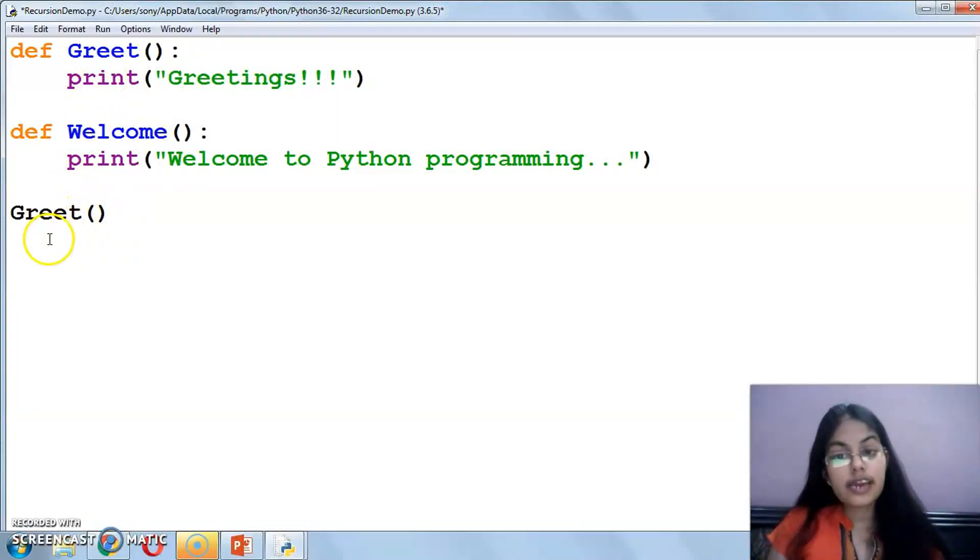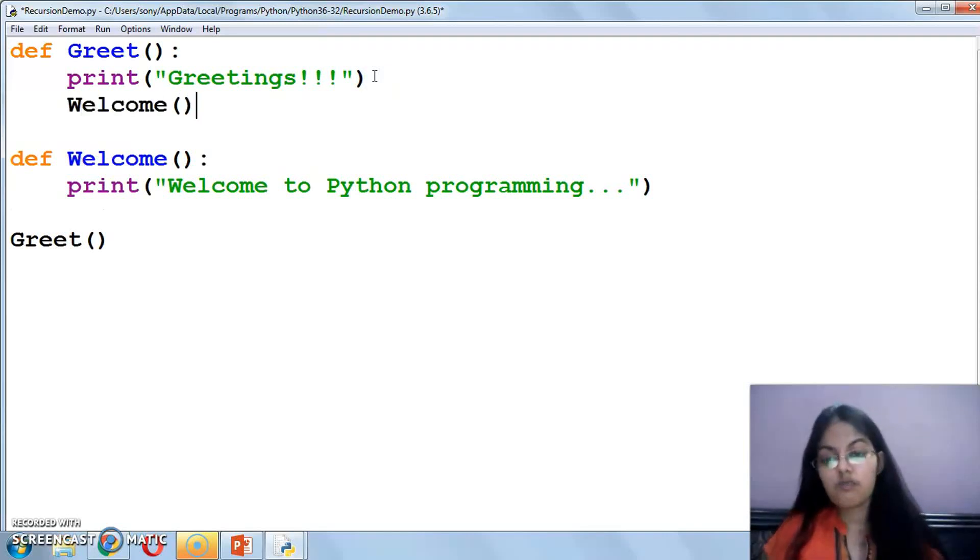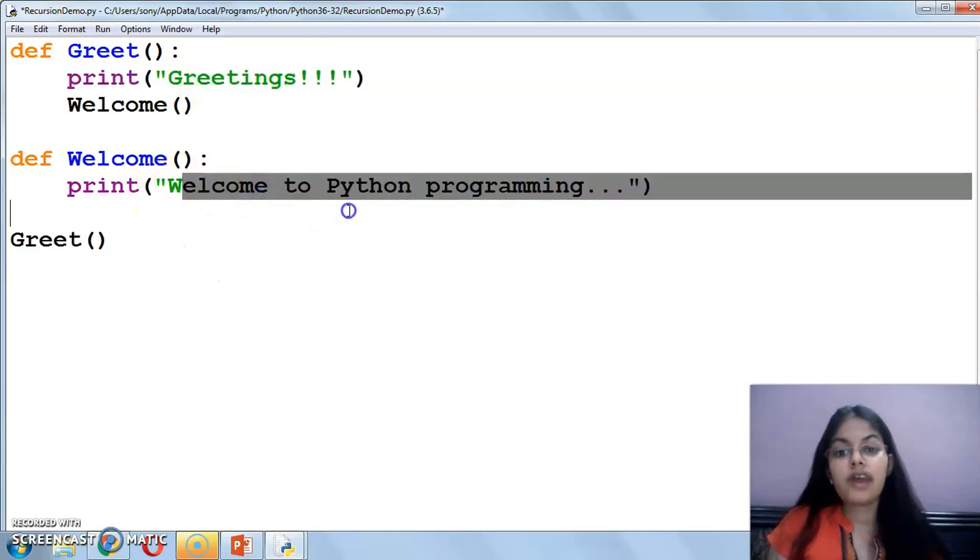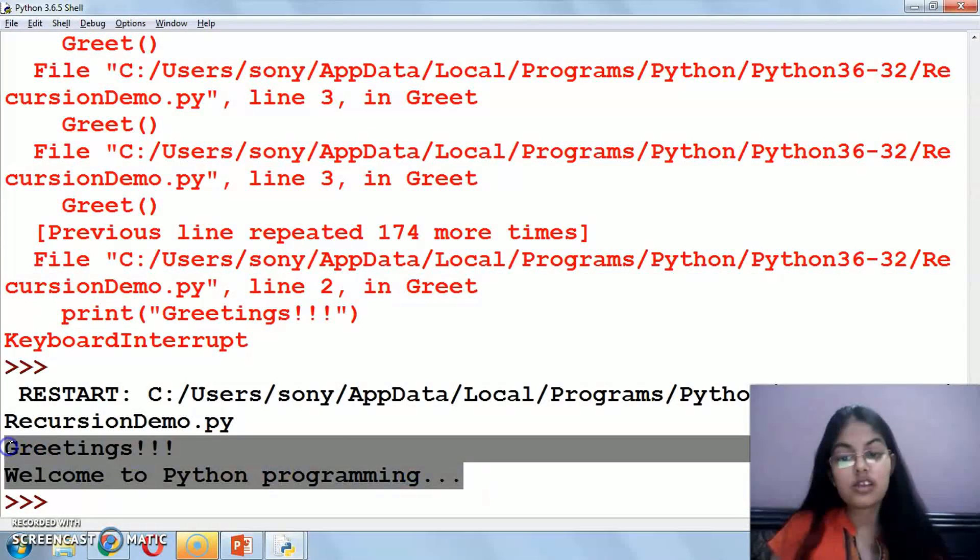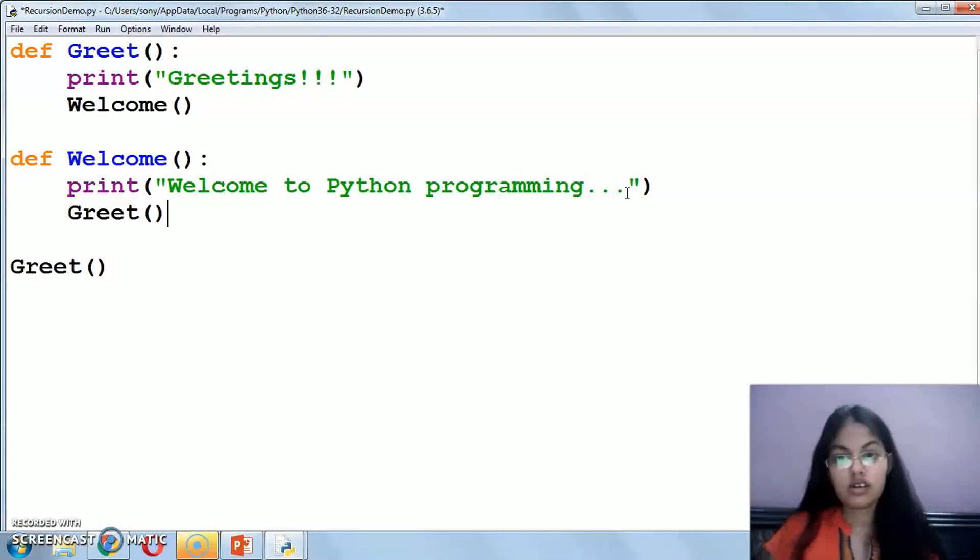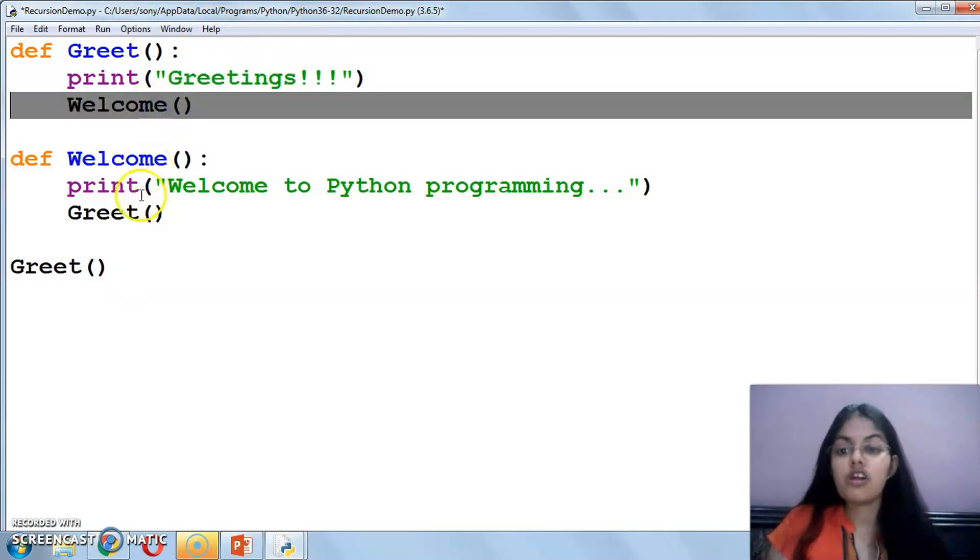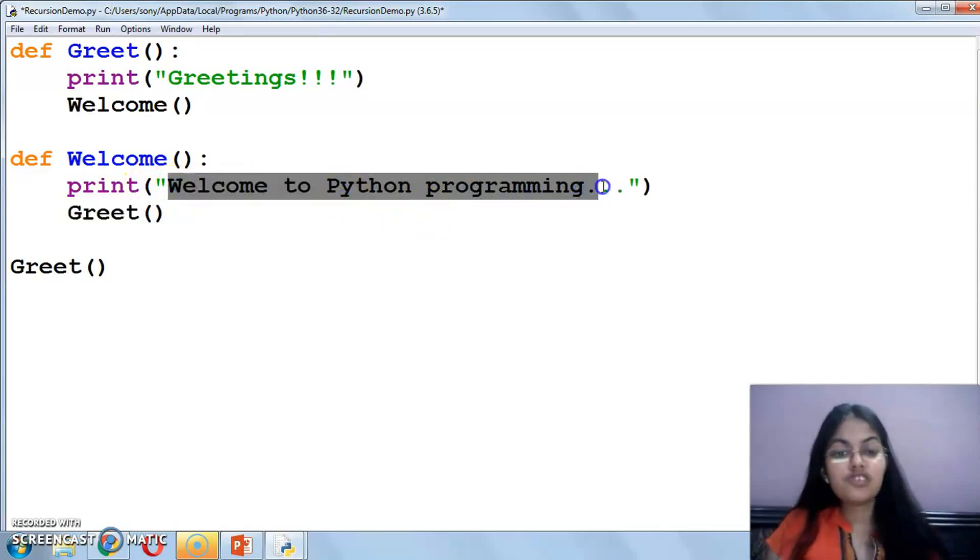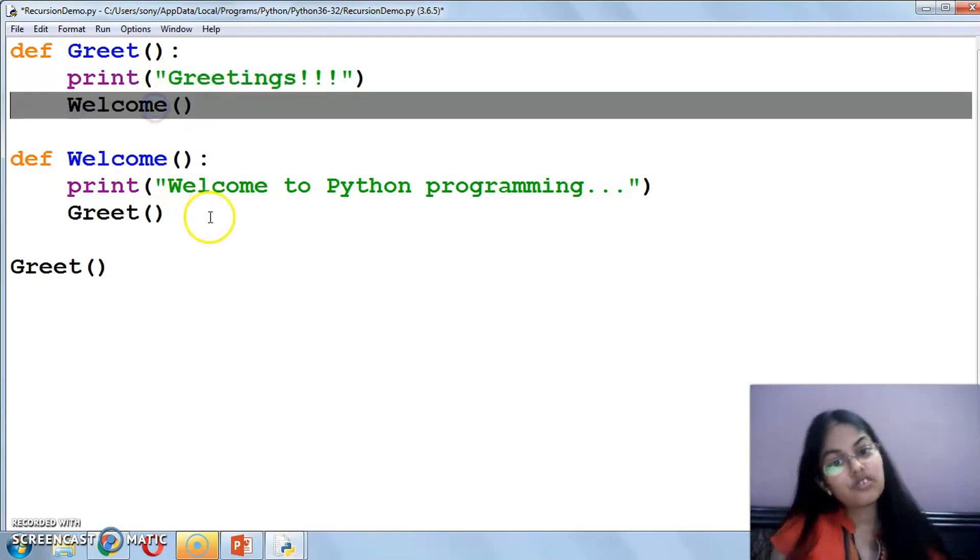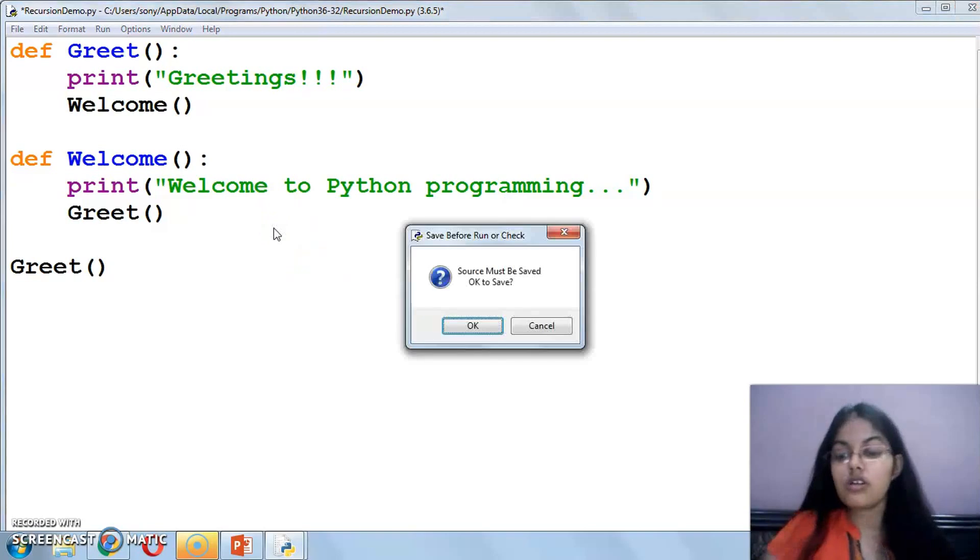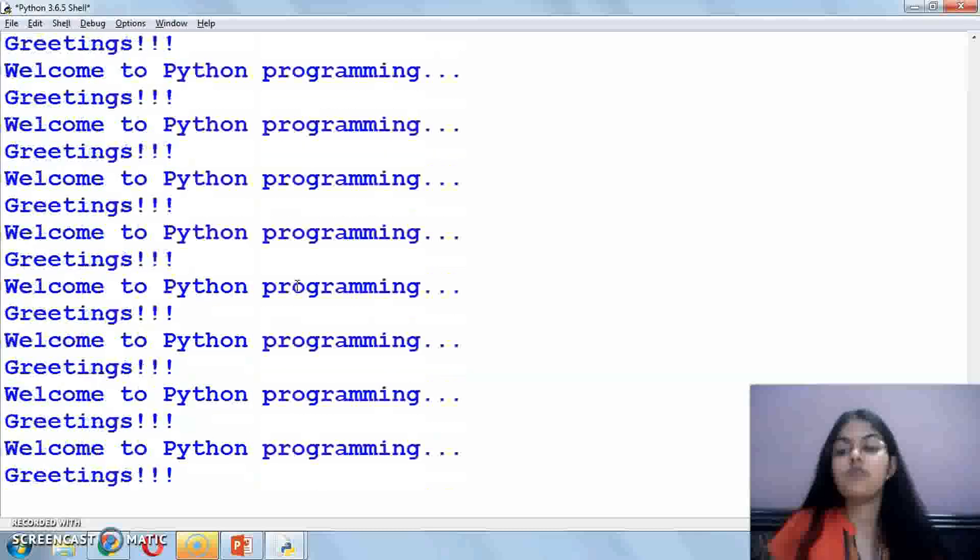We are having two functions here, but I am calling only one function that is greet. When I execute this, the greet function will be called and it will print the message greetings. After that I have called the welcome function, so after printing greetings it will print Welcome to Python programming. If I just write this much, let's execute. This is just a simple function call, not recursion yet. Now I have called the greet function again from within welcome. See, this will continue executing. This process will go on infinite times.